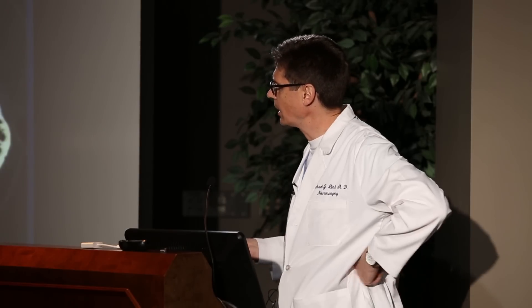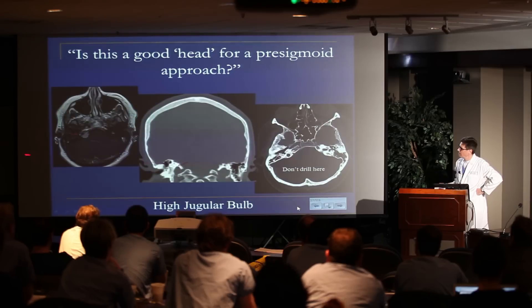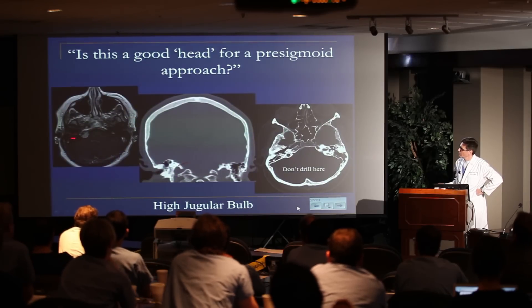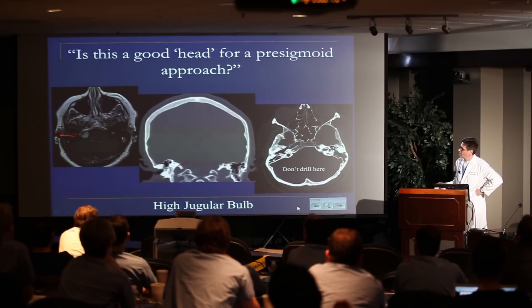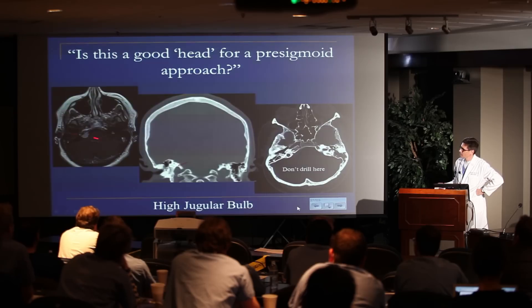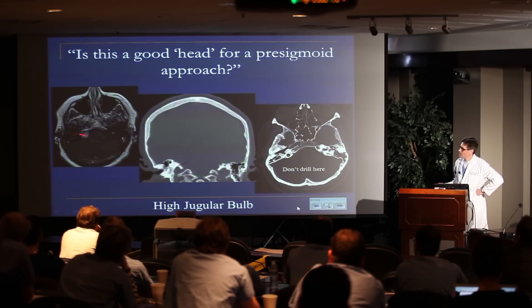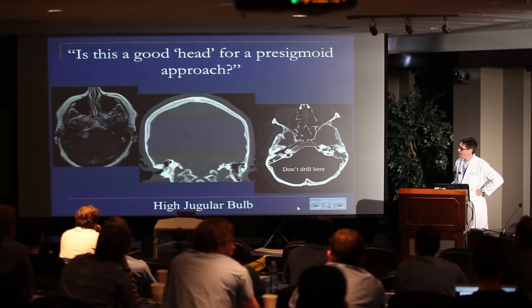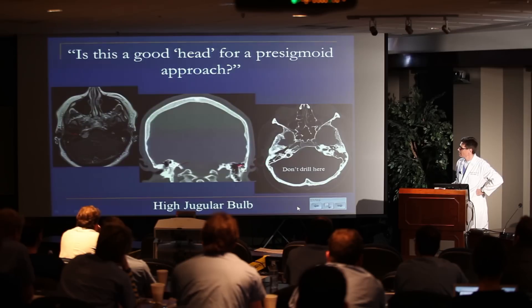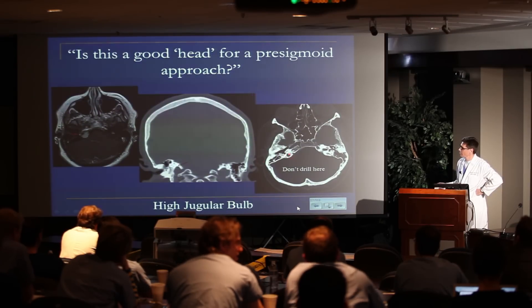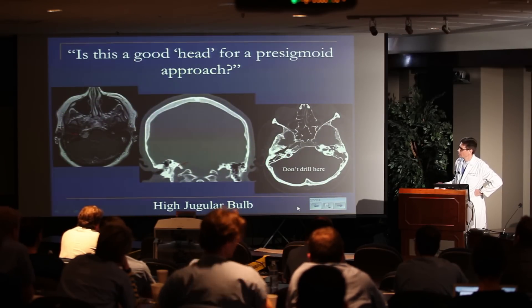That's one I would not consider for a pre-sigmoid, trans-lab, or posterior petrosectomy approach. Similarly, this was a bigger tumor in the posterior fossa, and this is just the inferior extent. As you can see, if you're coming pre-sigmoid, the jugular bulb is going to be right in your way because it's a relatively high jugular bulb. You'd drill through here and run right into it.